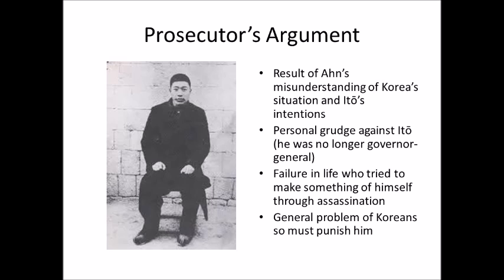They even went so far as to argue that Ahn Chungun was a failure in life — for example, his attempt to build a coal mine as part of the patriotic enlightenment movement had failed — and so he tried to make people forget his failures by killing Ito. Never mind that the coal mine failed in part because of Japanese obstruction. Because Koreans don't respect life and use assassination so much, the prosecutor argued, Ahn needed to be severely punished and executed.